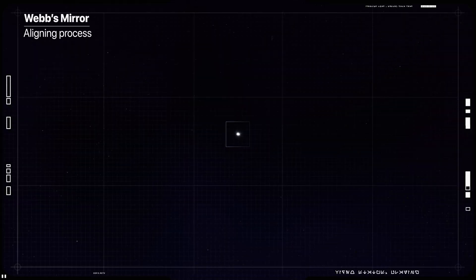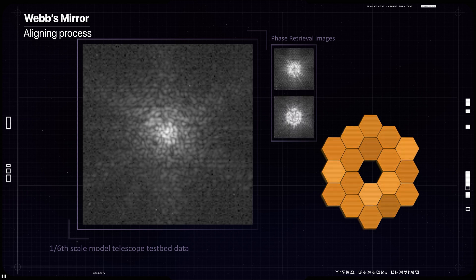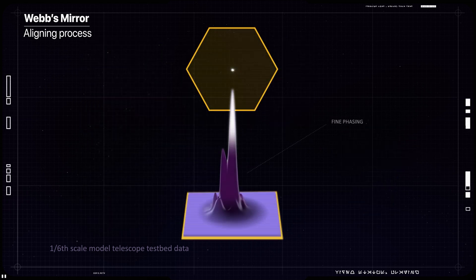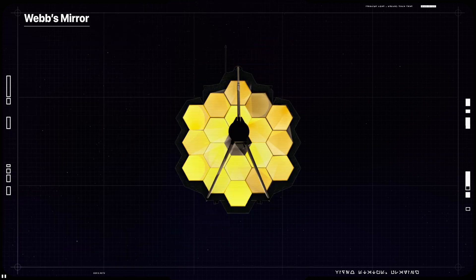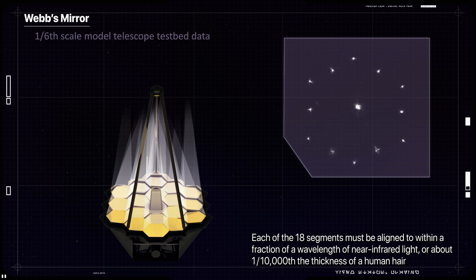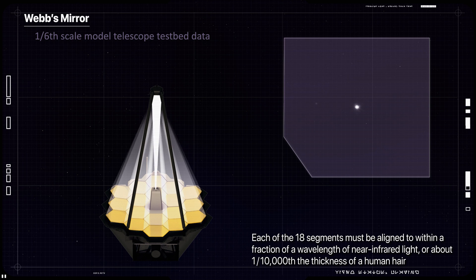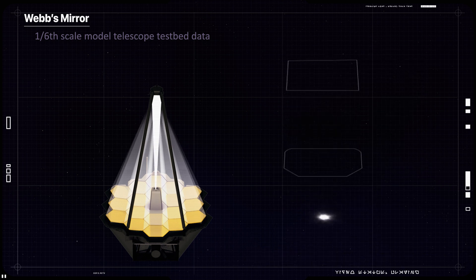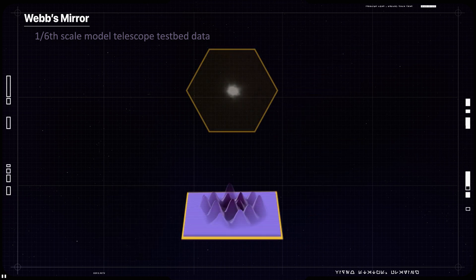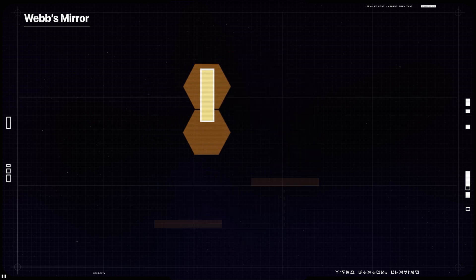The telescope's primary mirror is made of 18 hexagonal segments, but in order to act as a single optic, each of the segments must be aligned to within a fraction of a wavelength of near-infrared light, or 10,000 times thinner than a human hair. Through a process called wavefront sensing and control, the NIR cam instrument measures any imperfections in alignment of the mirror segments that prevent them from working as a single mirror.